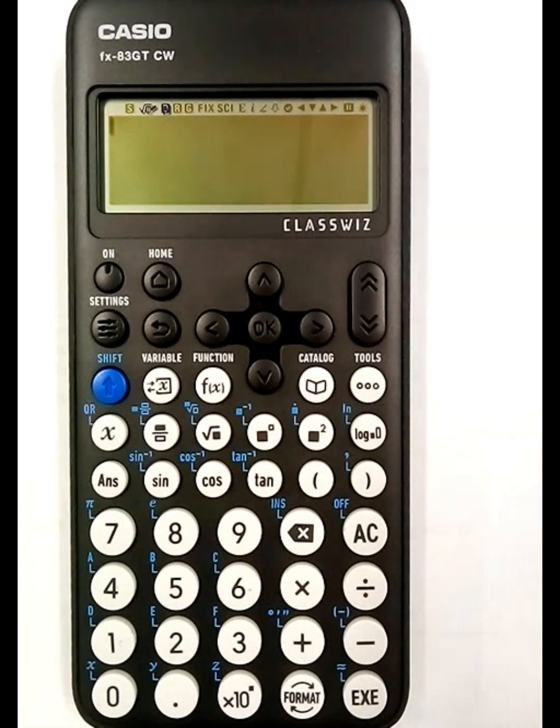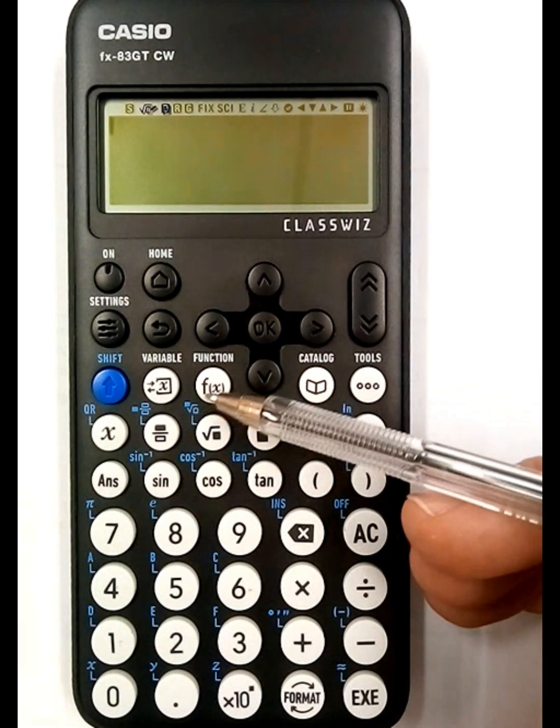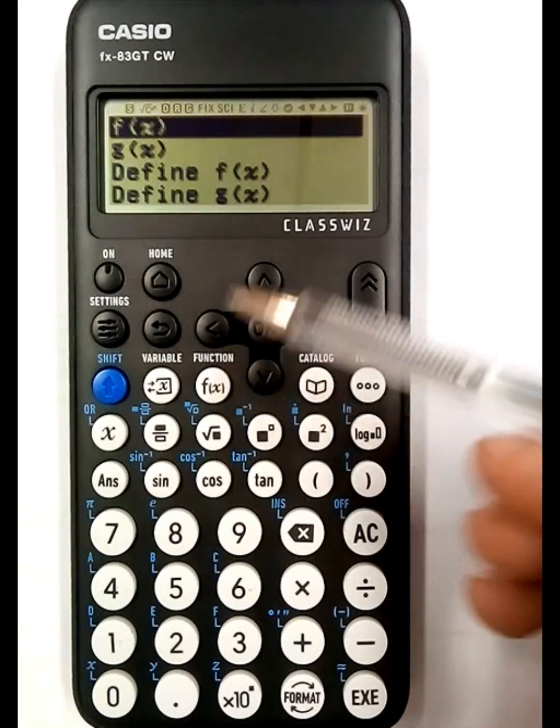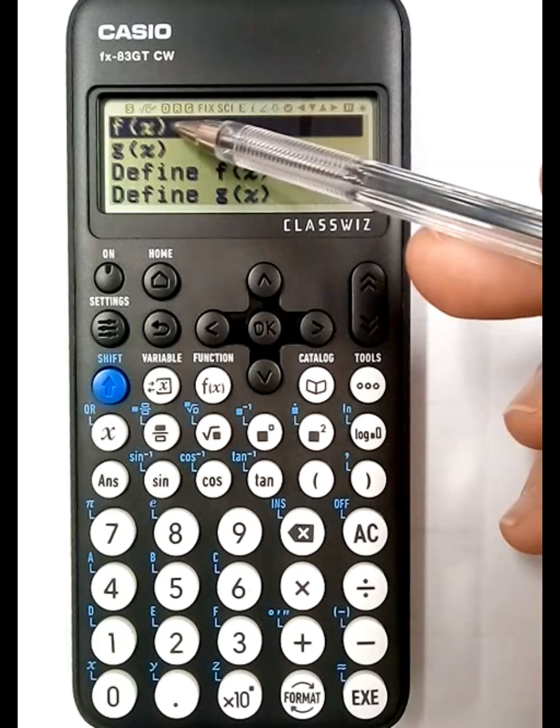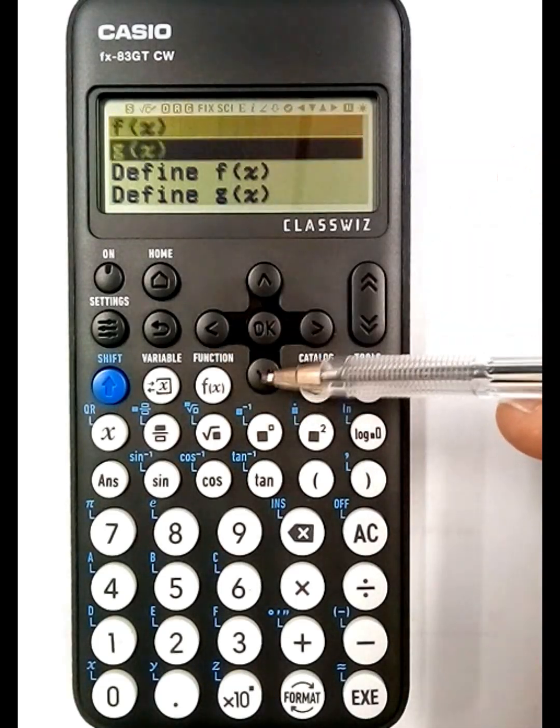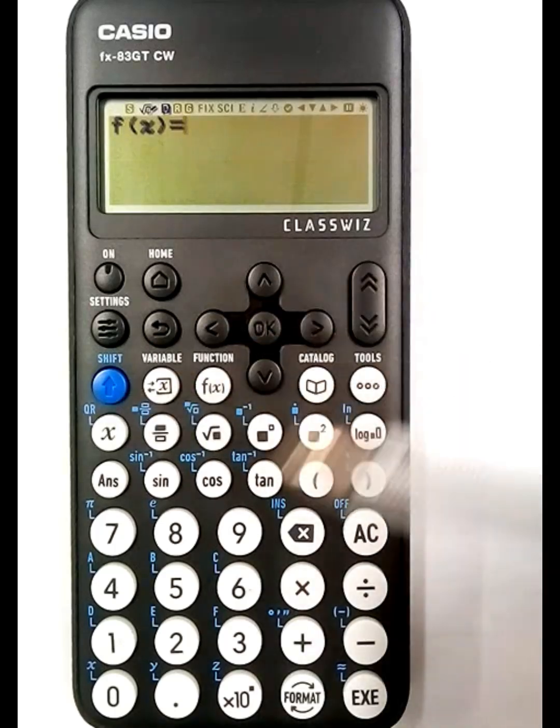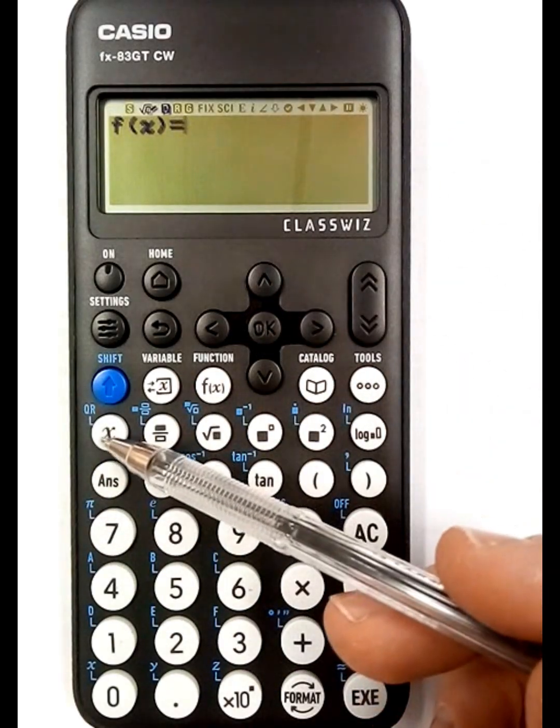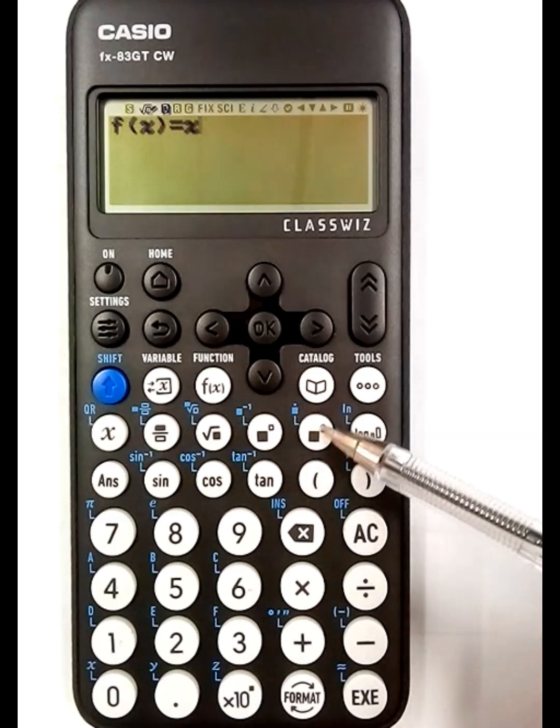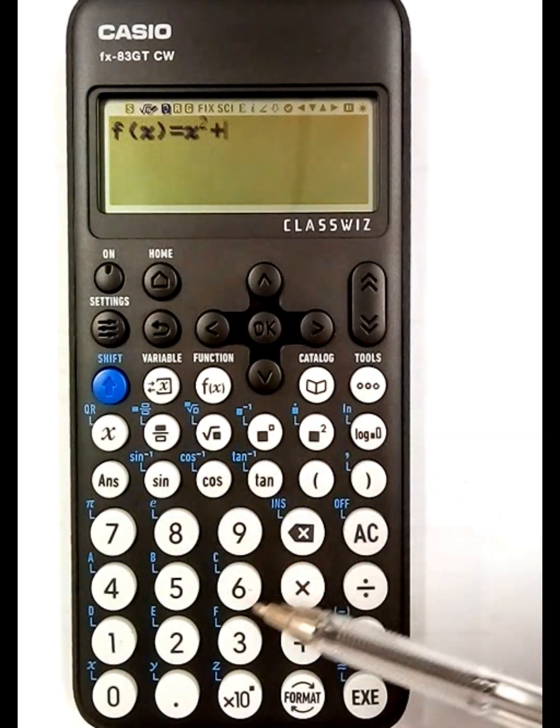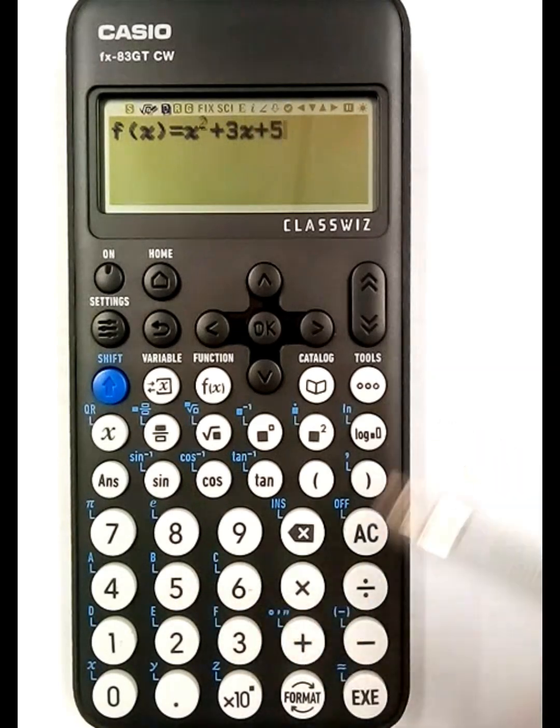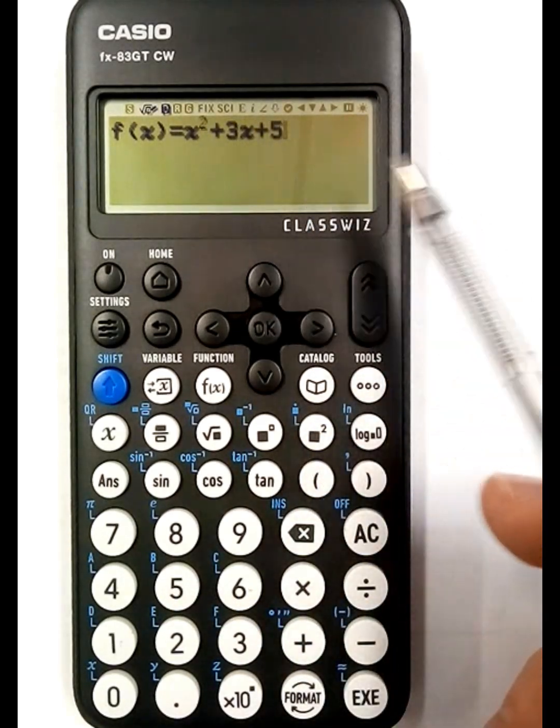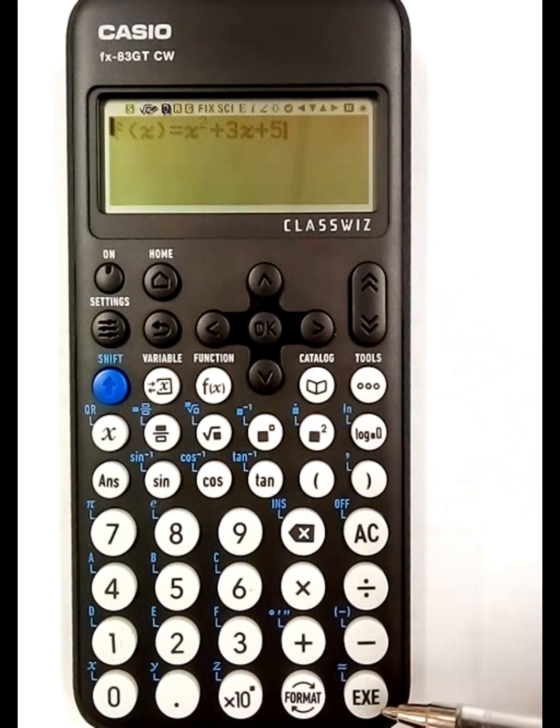The first one obviously is functions, how to manipulate functions. So we're going to use our function button here, FFX. Now it gives you options, the ones you'll particularly be using is define FFX and just FFX. So if I go down to define FFX it allows me to input any x value. So I'm going to use let's say x squared plus 3x plus 5. So all I do is press execute and it's saved.